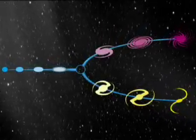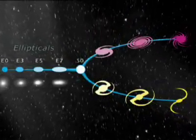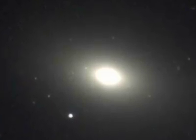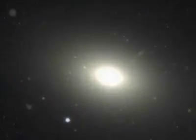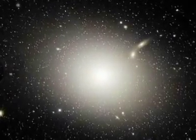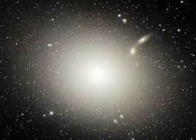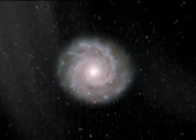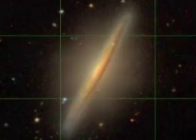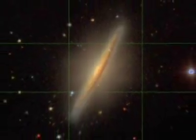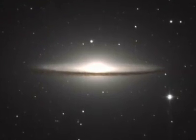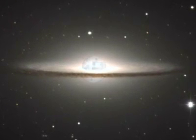Edwin Hubble drew a diagram called the Tuning Fork Diagram because of its shape. It distinguishes between two main types of galaxies: ellipticals and spirals. Elliptical galaxies are blimps filled with old stars that move in no specific pattern. Spiral galaxies, on the other hand, are more like college dorms — they have an eye-popping disk filled with young stars, gas, and dust. At their core lay an exceedingly bright bulge, reminiscent of disco balls.